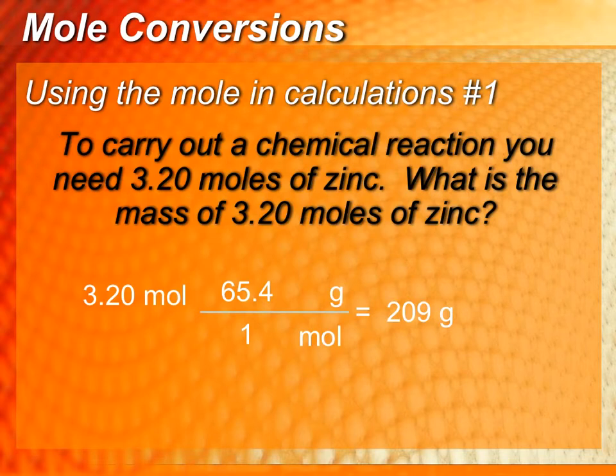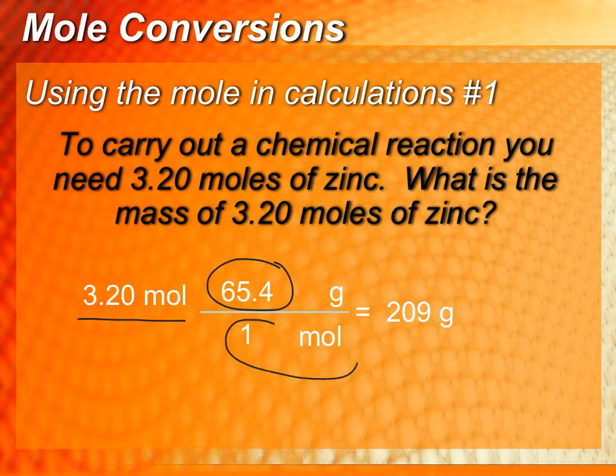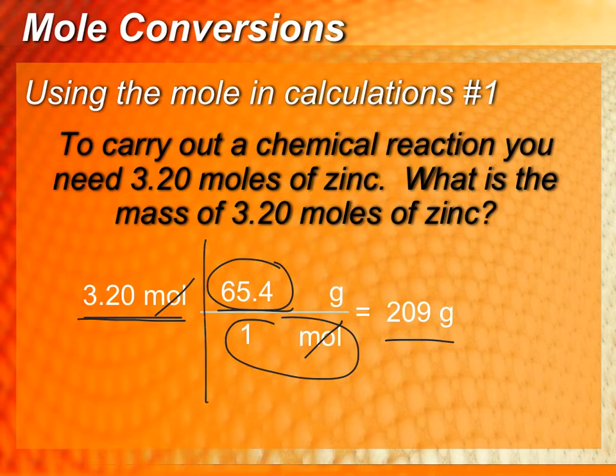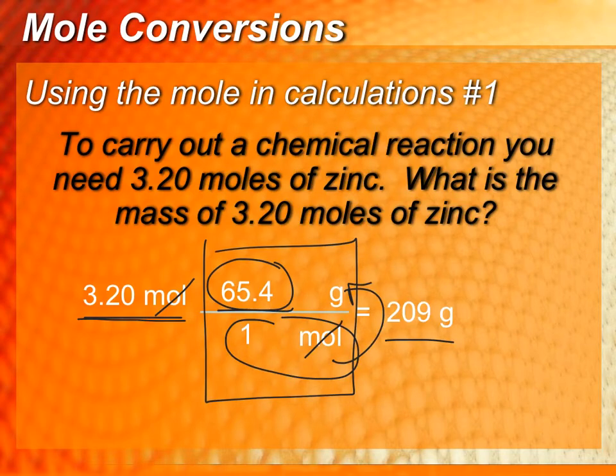The way that we would set up this problem is we would take our given, which is going to be our 3.2 moles. We would use the molar mass of zinc, so this number 65.4 you can find on the periodic table, and we're going to put it over 1 mole. Remember, we're going to need these units to cancel out to give us the number of grams we need. Since this value is on the top and this number is on the top, you're just going to multiply to get this value. So remember, this thing right here is saying that 1 mole of the substance is equal to this many grams of it.